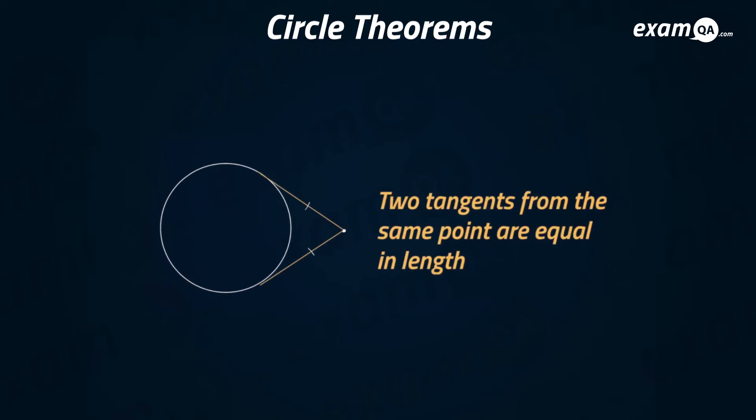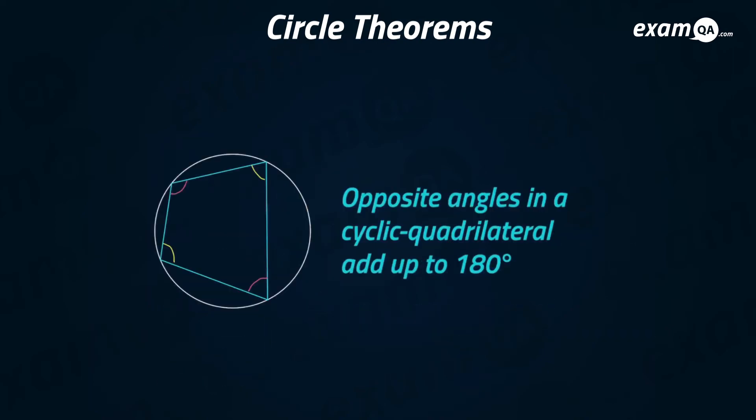Two tangents from the same point—a point outside the circle—are equal in length. So that basically means these are two tangents, right? This length is the same as this length. So if that was five centimeters, that would be five centimeters as well. Let's go to the next one.